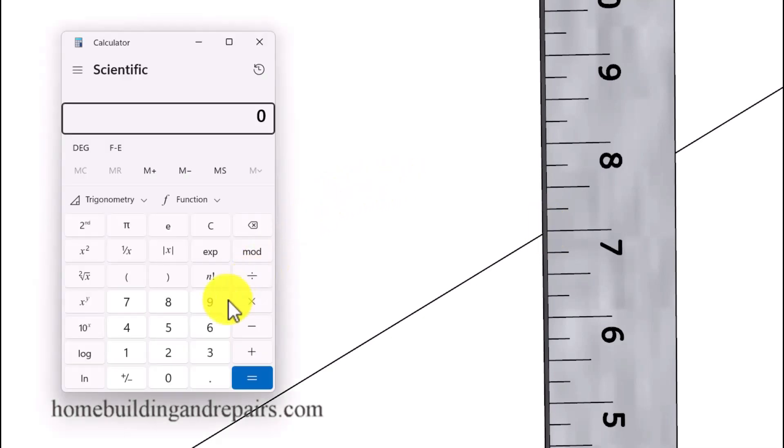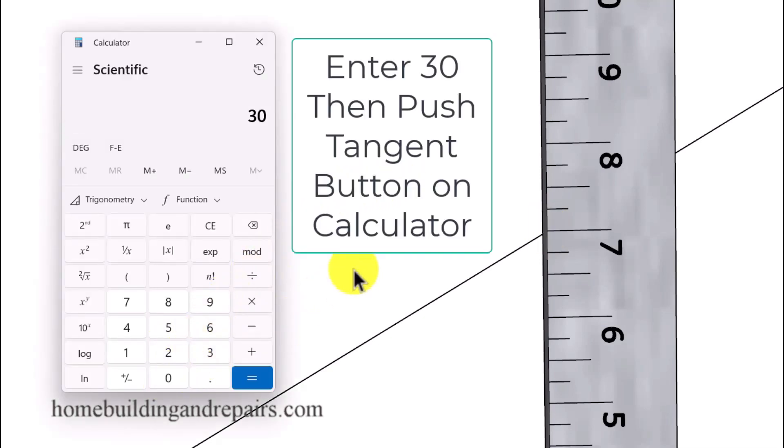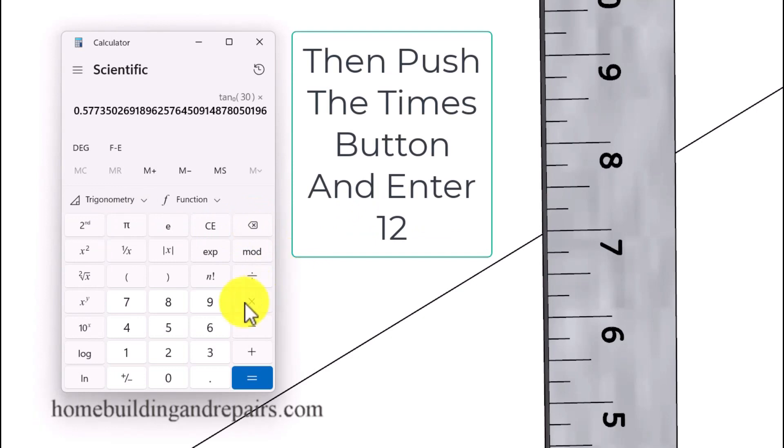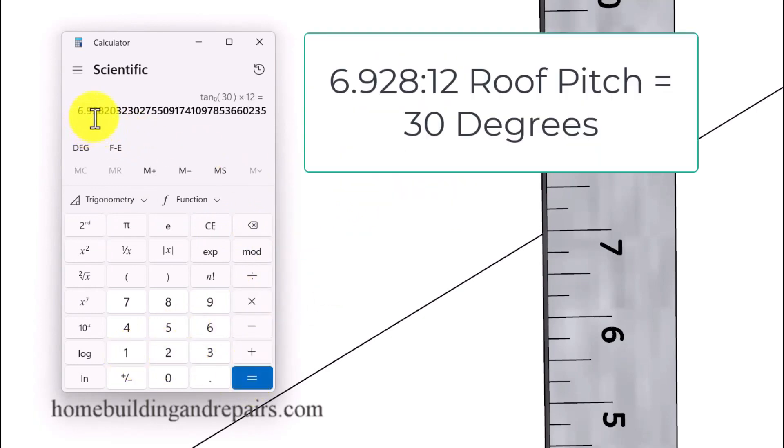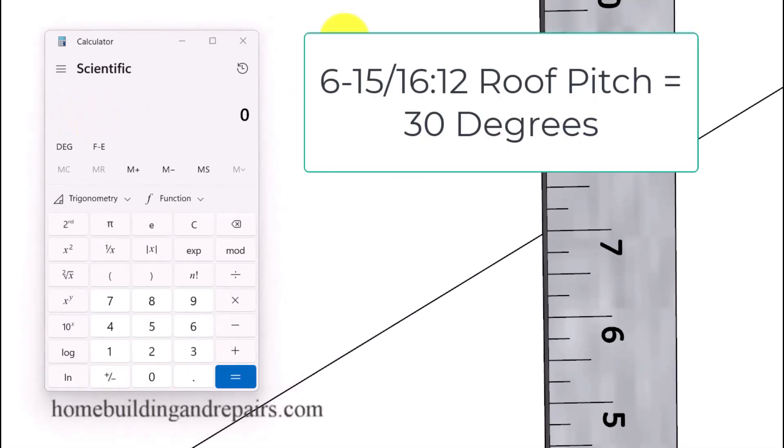So let's go ahead and grab our calculator. We're going to enter in 30. We want 30 degrees. Then we're going to pull up our tangent key. Your calculator might have the tangent button right on the front of it. Then we're going to push this button and then multiply it by 12. That's going to give us 6.928 inches or we can round this off to 6.93 inches or about 6 and 15 sixteenths of an inch.